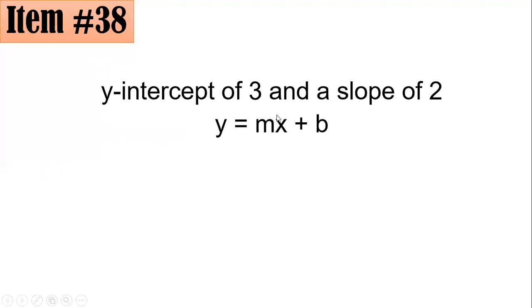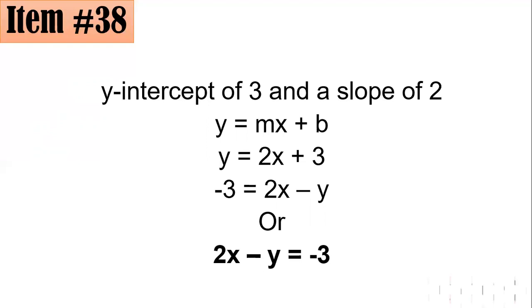With these givens, by substitution you have y is equal to 2x plus 3. In this case, I subtracted both sides by y, so the y here became negative y on the right side. This 3 becomes negative on the left-hand side, so we have negative 3 equals 2x minus y. If we use the symmetric property of equality, then you will have 2x minus y equals negative 3, letter D.